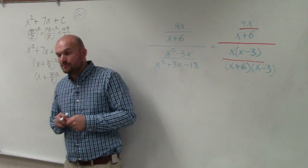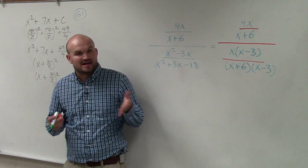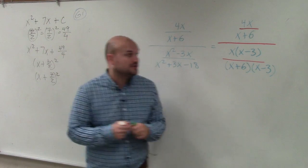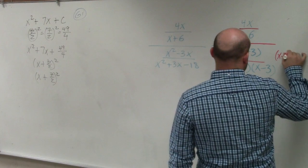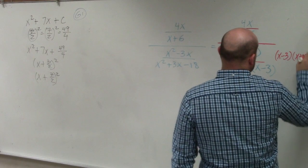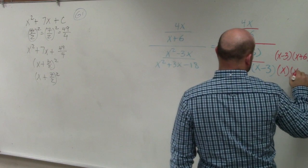Basically, what I try to reiterate for everybody is whenever you're trying to get a fraction off the denominator, the best thing to do is multiply by its reciprocal. So I'm going to multiply by x minus 3 times x plus 6 over x times x minus 3.